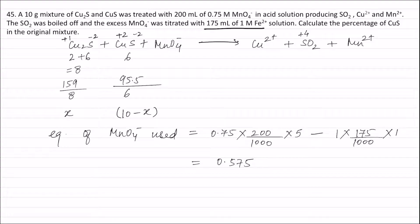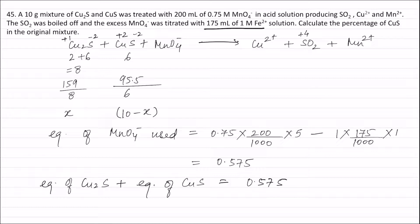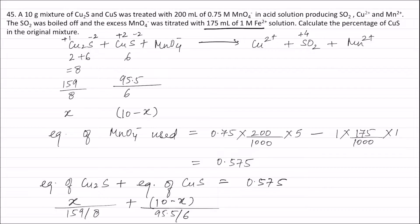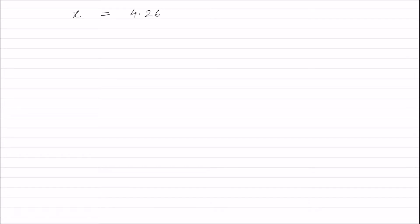Equivalents of Cu₂S plus equivalents of CuS equals equivalents of MnO₄⁻ used, which is 0.575. Therefore: x/(159/8) + (10 − x)/(95.5/6) = 0.575.